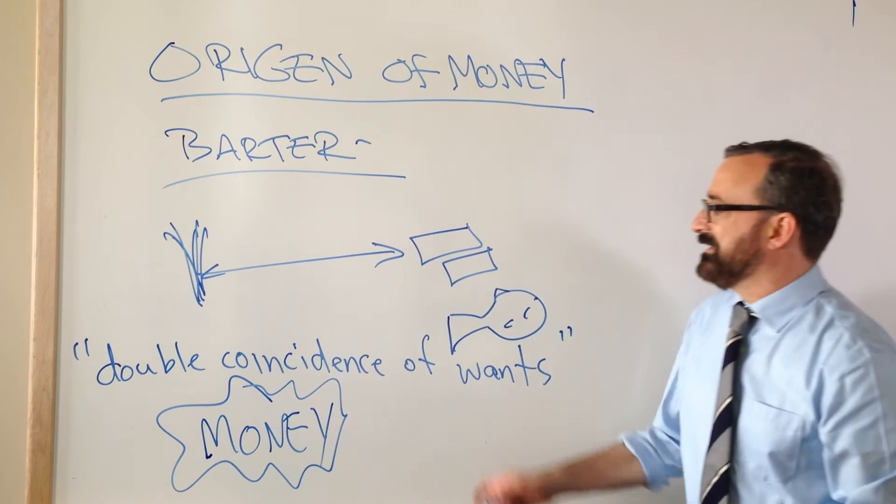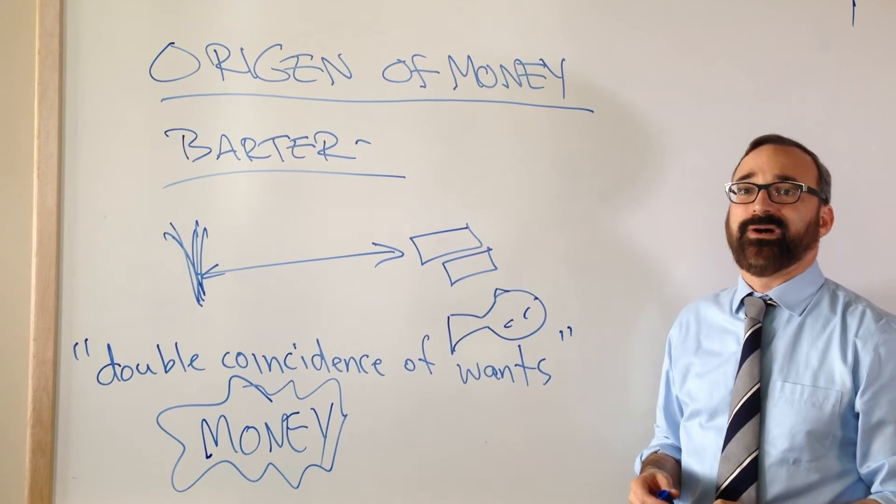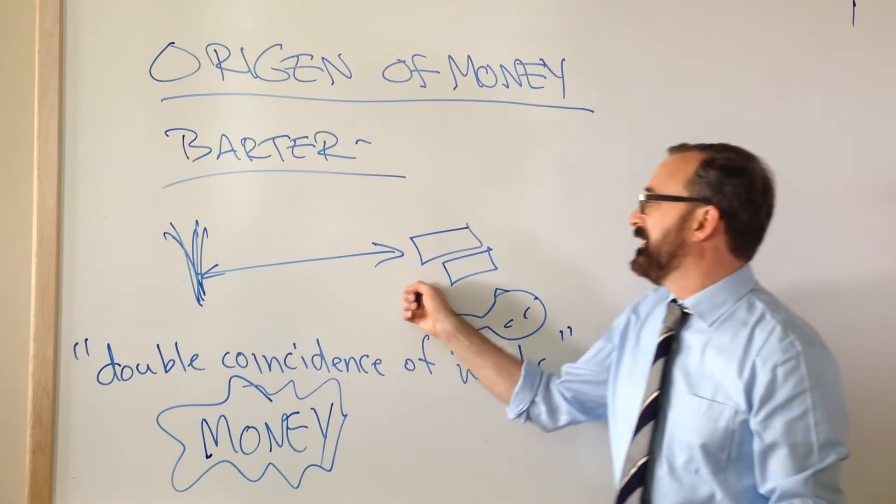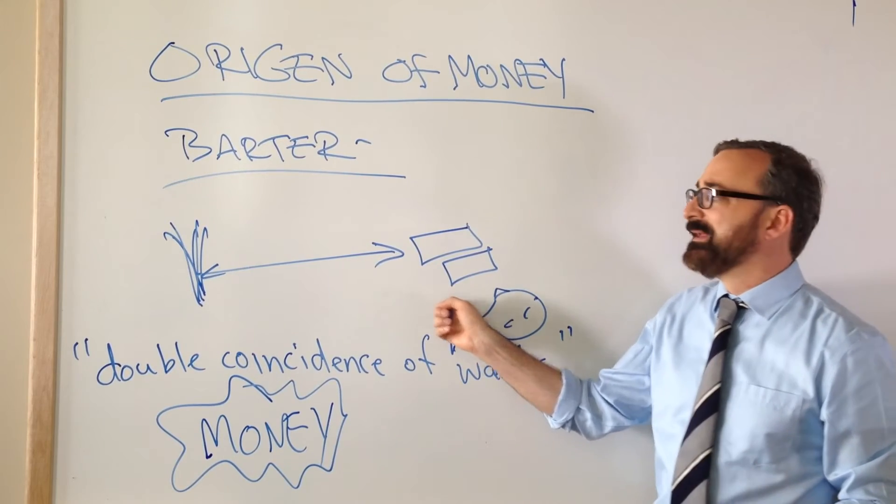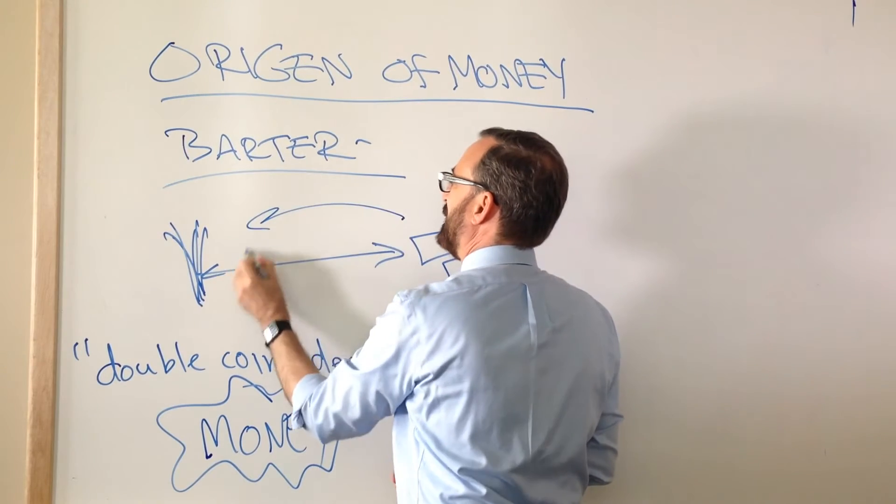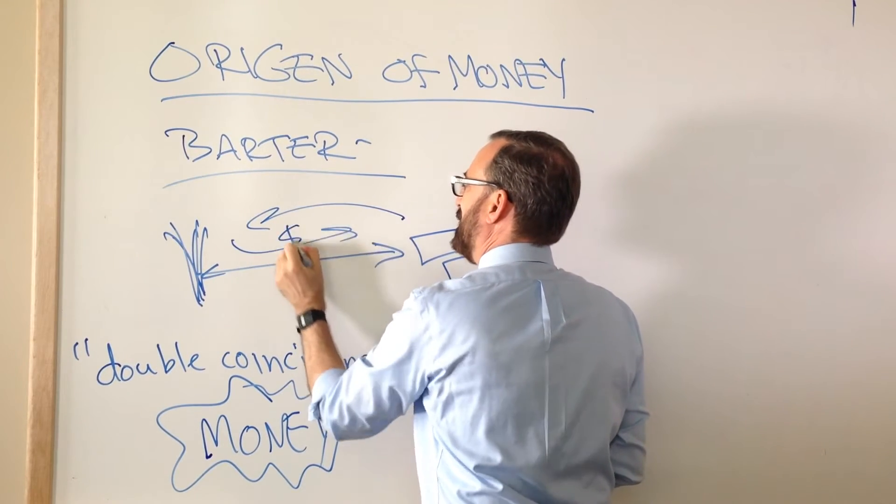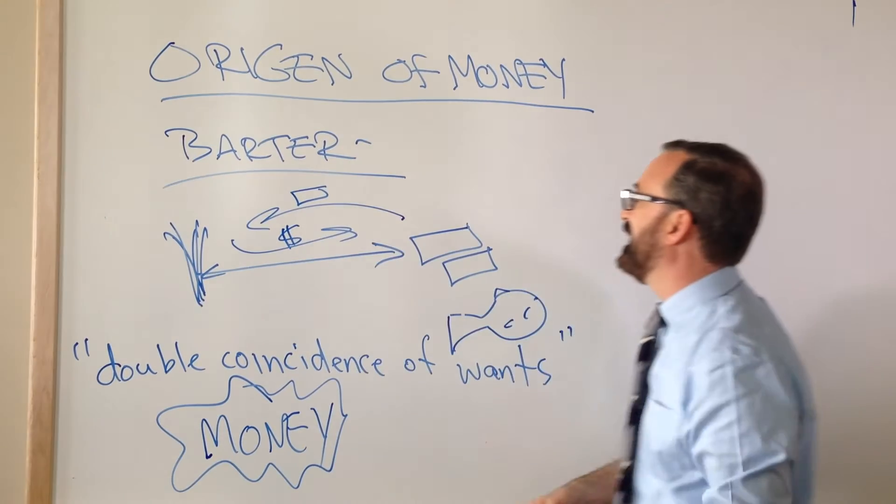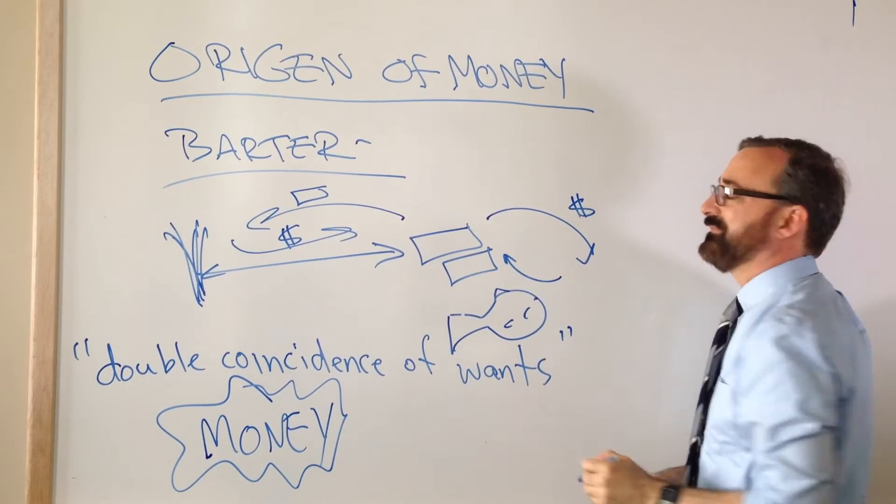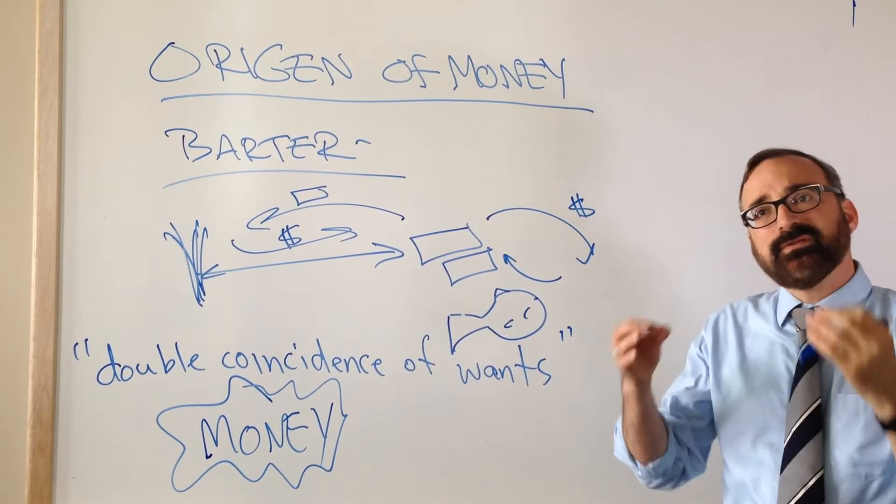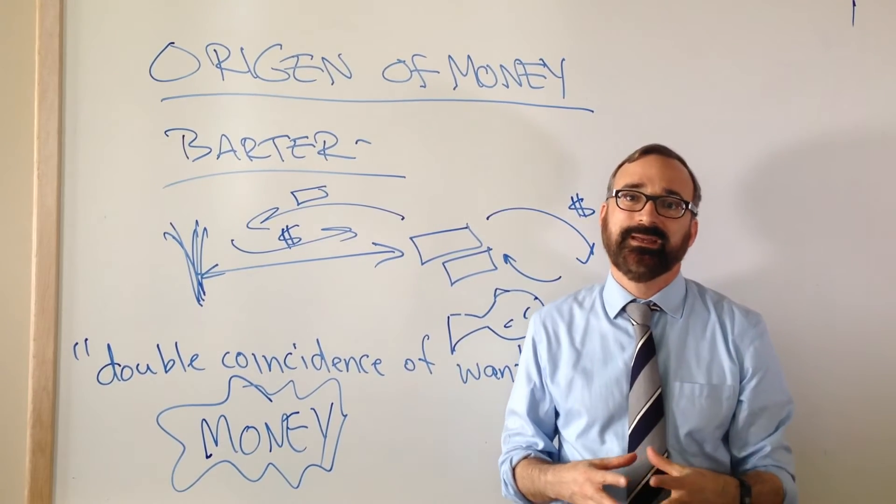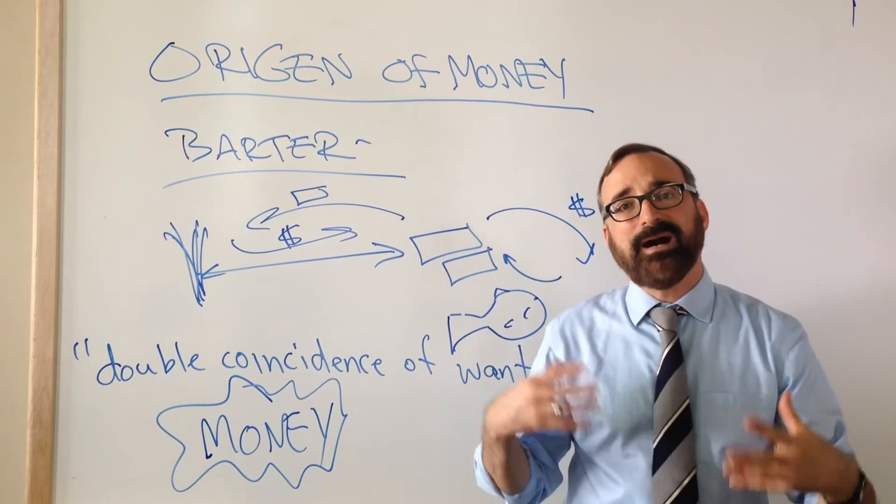So money comes in to solve the problem of the double coincidence of wants. So if I need stone and all I have is grain, but you don't want grain, you want fish, what I can do is I can buy your stone and give you money, so the stones are going this way, the money is going that way, and then you can take the money, find someone with a fish and get your fish. It's a terrific story, it's a very clean story, it's a very neat and intuitive story that helps us hypothesize about why it is that human beings living in societies would invent money as a medium of exchange.